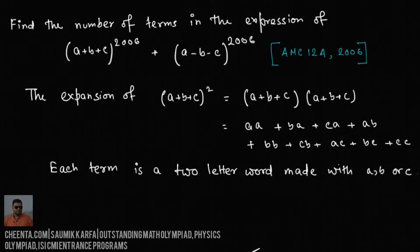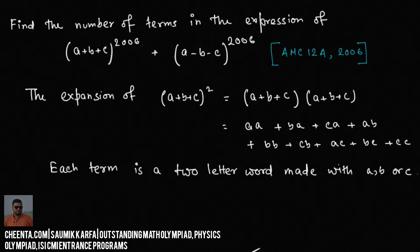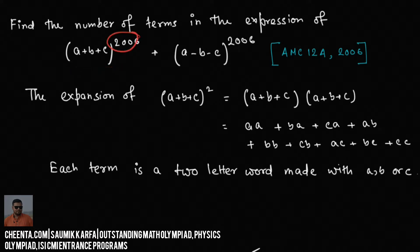Let us see this combinatorics problem from AMC 12A 2006, problem number 24. It is asking us to find the number of terms in the expansion of (A + B + C)^2006 plus (A - B - C)^2006.